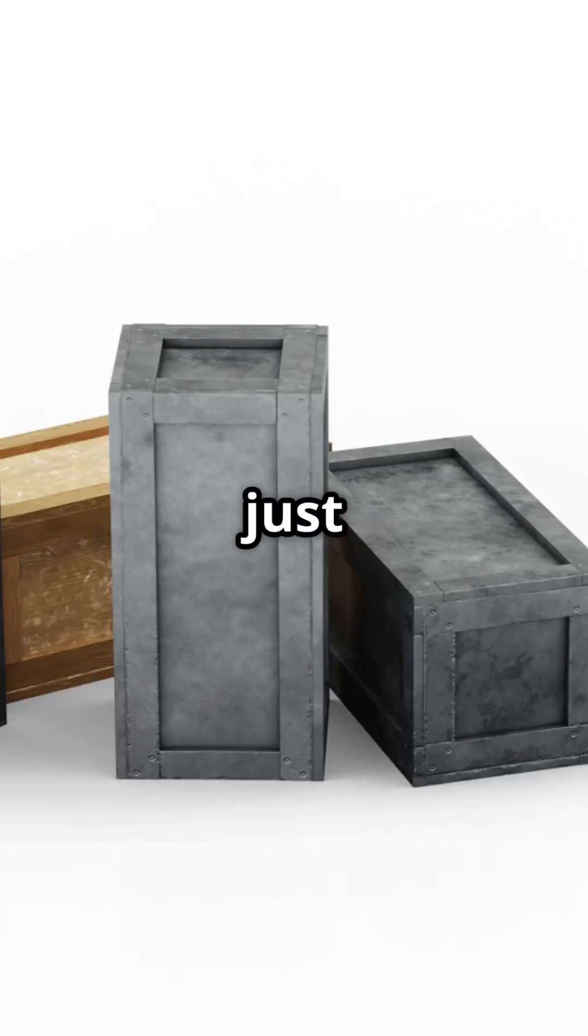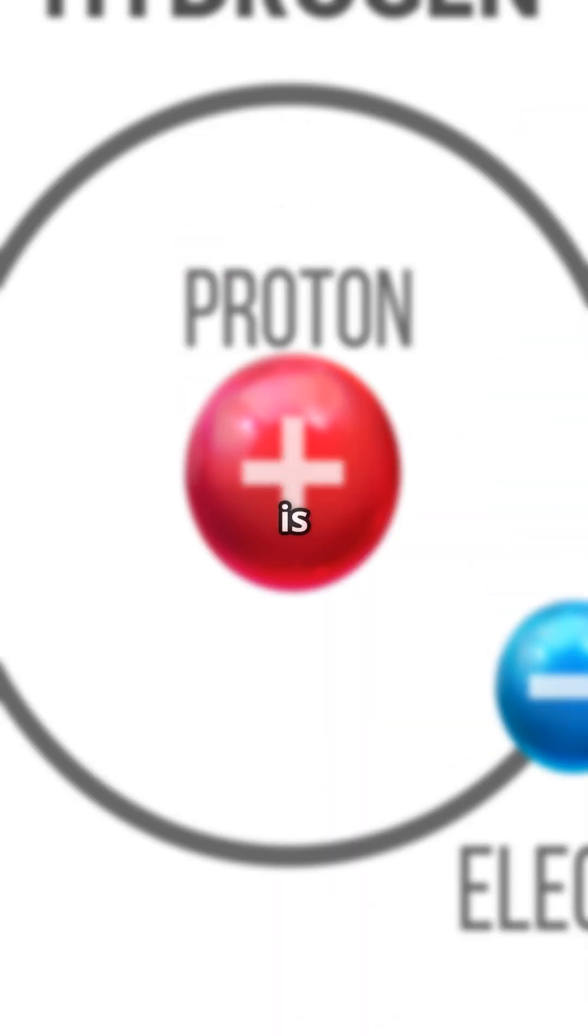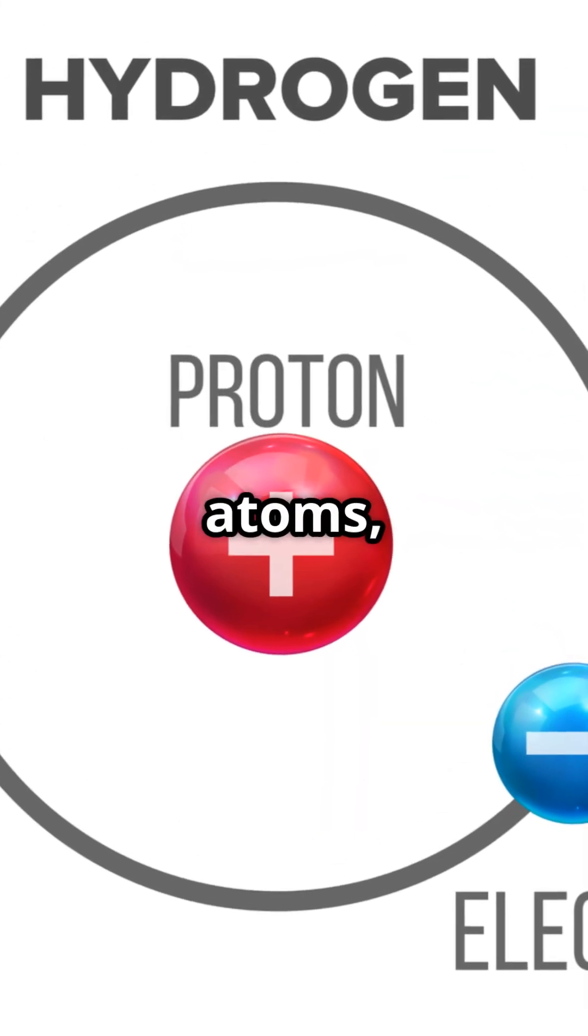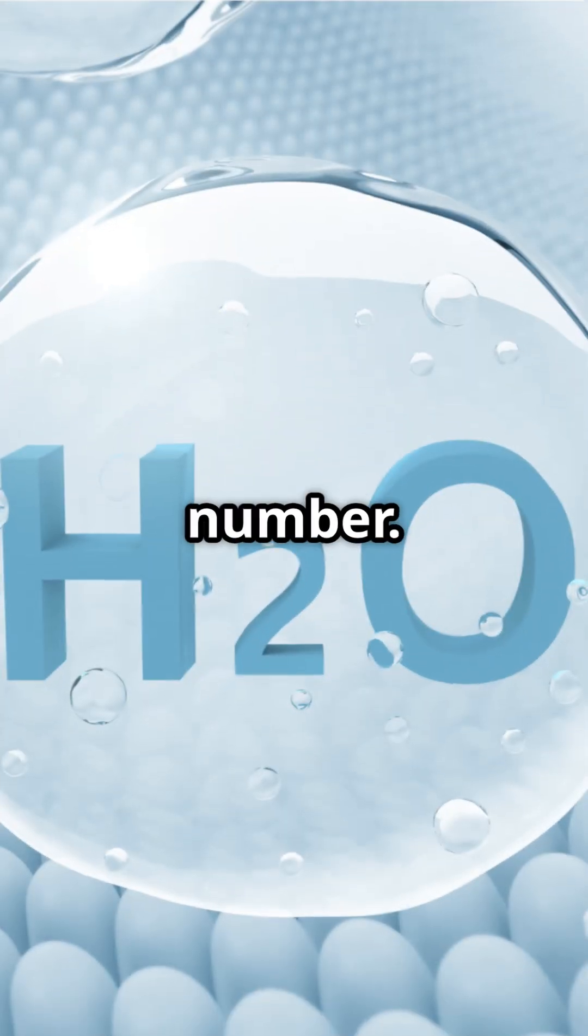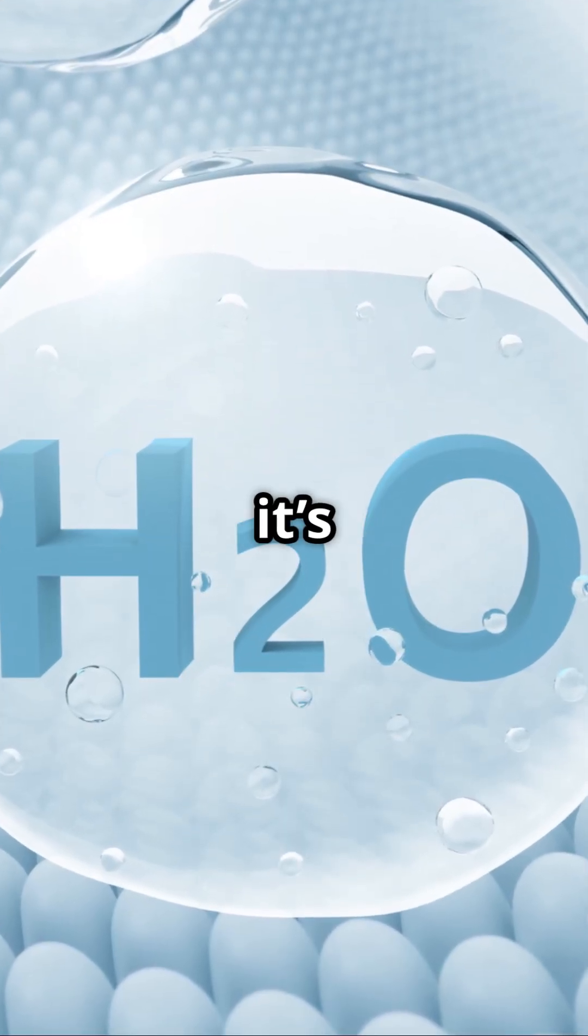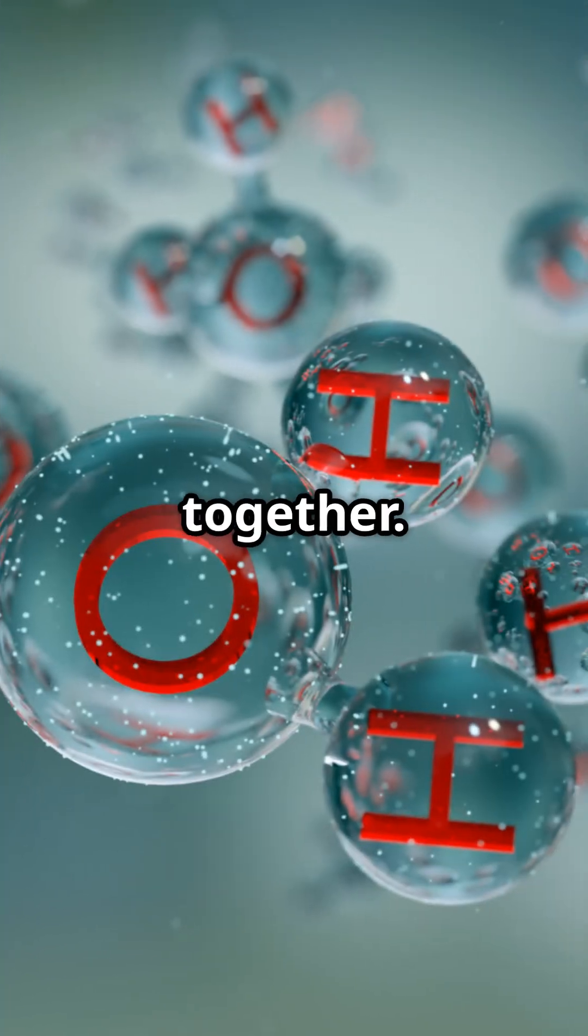But not all matter is just one element. Each element is defined by the number of protons in its atoms, which is also known as atomic number. Take water. It's made of two elements, hydrogen and oxygen, combined together.